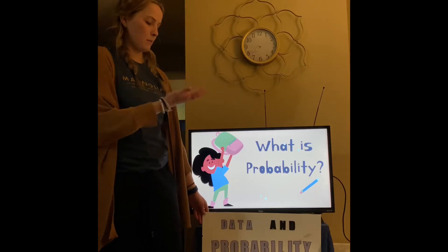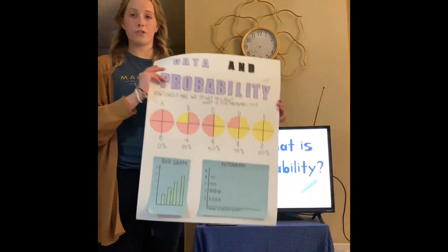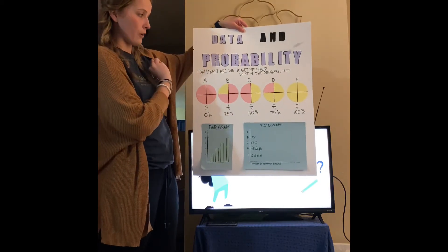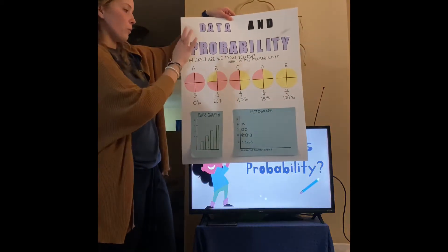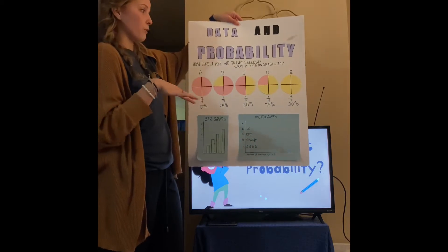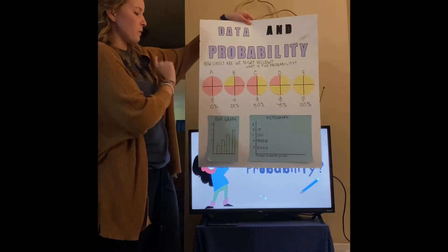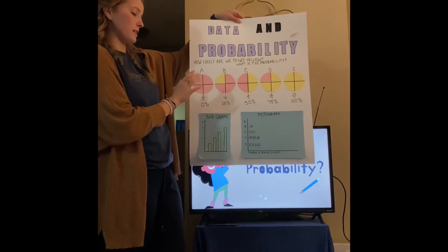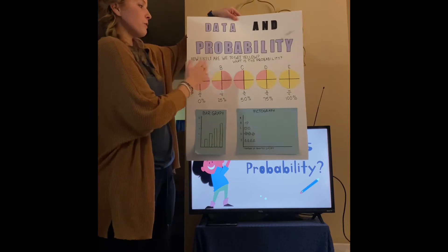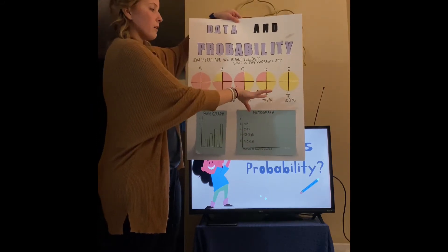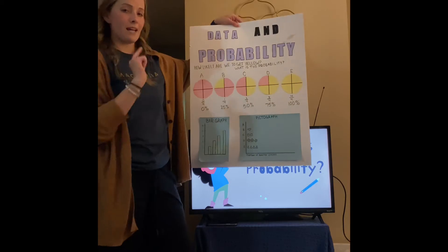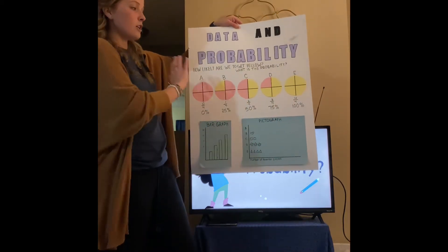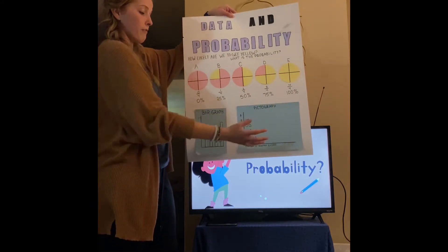Now we're going to talk about probability. I have this anchor chart here that shows how important data and probability are together. We use fractions, which we have learned in the past, to represent probability. In this example, the likelihood of getting yellow is completely unlikely — 0%, or 0 out of 4. And if we move down to D, it's 3 out of 4, so that's going to be 75%.